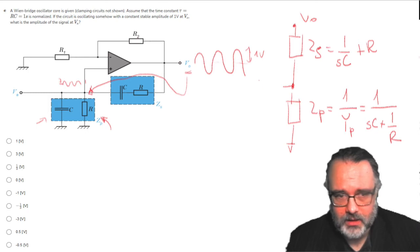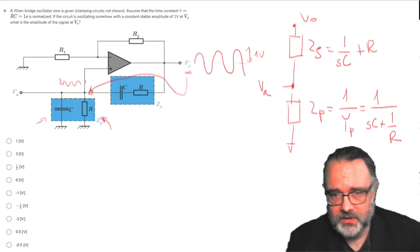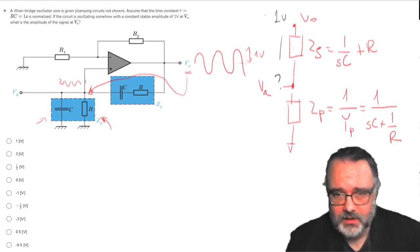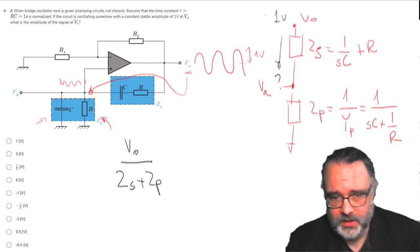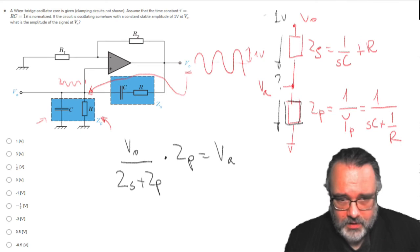So now my question is reduced. If this is 1 volt, what is this voltage? So let's see. Then I can write the current, and the current is simply Vout divided by Zs plus Zp. This is the current. And if I multiply by Zp I'll get simply, so if I multiply this current by this impedance I'll simply get Va. What I need basically. So let's solve this.